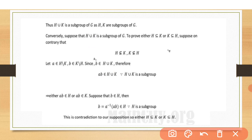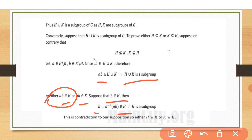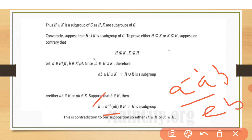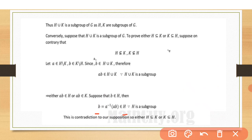So AB either belongs to H or AB belongs to K. Suppose that AB belongs to H. Then, since H is a subgroup, the inverse of A is also present in H. So A⁻¹ · (AB) = (A⁻¹ · A) · B = e · B = B. This shows that B belongs to H, whereas our supposition was that B does not belong to H.